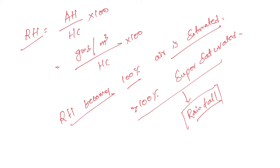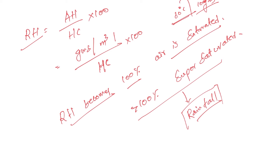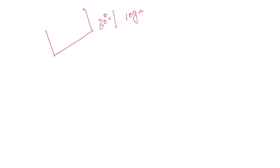Relative humidity reaches 100% when absolute humidity equals humidity capacity — the number of grams of moisture the air can hold at a given temperature. Let's say at 30 degrees Celsius, a unit volume of air can only hold 10 grams of water — that's the humidity capacity. If the absolute humidity is 8 grams, then 8 divided by 10 multiplied by 100 gives a relative humidity of 80%.